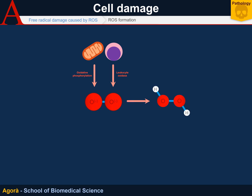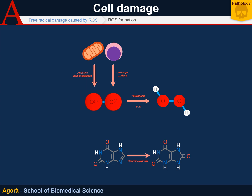Superoxide is converted into peroxide by the enzymes contained in peroxisomes or by superoxide dismutase. Peroxide can also be produced by xanthine oxidase, an enzyme that deals with the disposal of waste products from the catabolism of purines, in which it needs one molecule of water and one molecule of oxygen to produce uric acid, and in the process, hydrogen peroxide and rarely even superoxide can be formed.